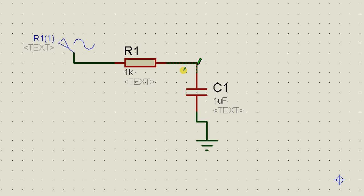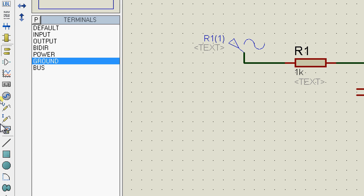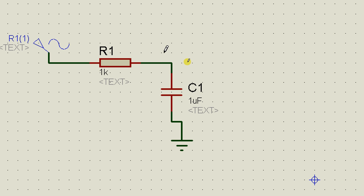And in parallel we're going to add a capacitor. Now in order to measure the voltage at the output end of the circuit we're going to need something called the voltage probe.